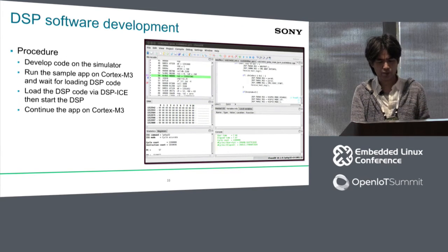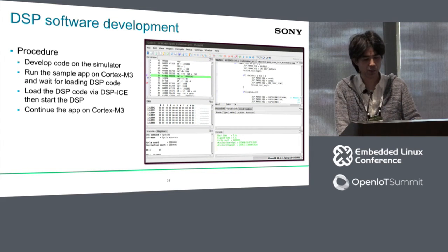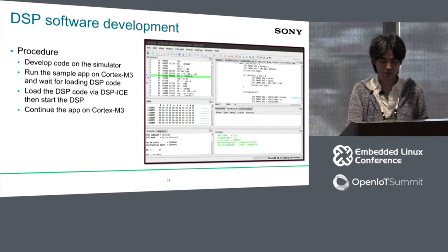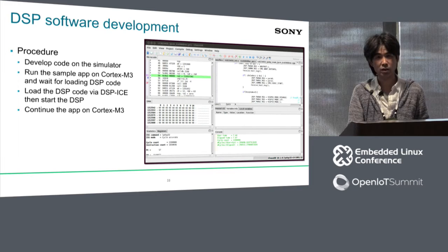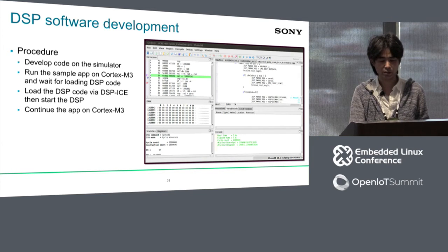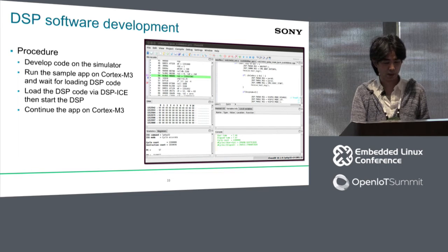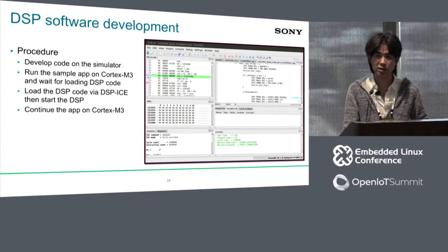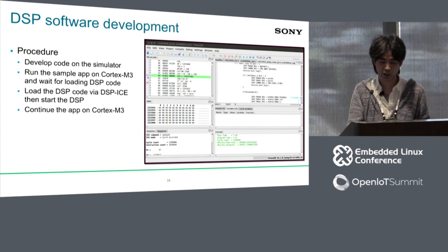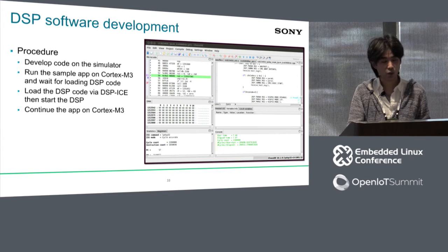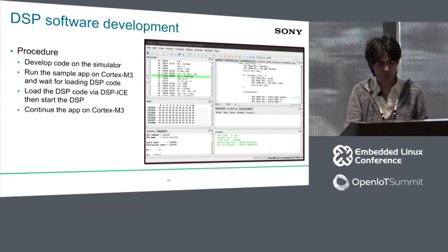This slide shows DSP software development. So far I explained open-source-based development, but unfortunately we had to use proprietary tools to develop DSP code. However, to improve productivity in DSP software development, we implemented features to assist development, since the DSP has to work with Cortex-M3. The typical process is: first develop DSP code on the simulator, then run a sample application on Cortex-M3 — for example a recording or playback application — then load the DSP code and start the DSP. Finally continue the application on Cortex-M3. It's very simple and we can easily test DSP code on our platform.